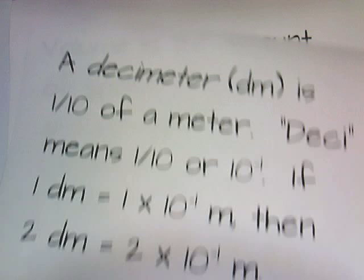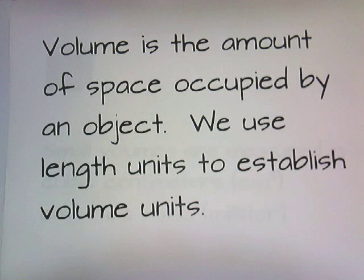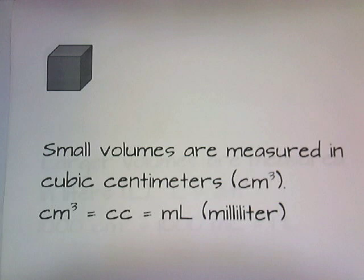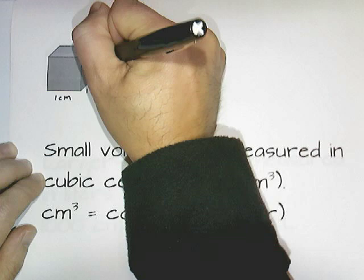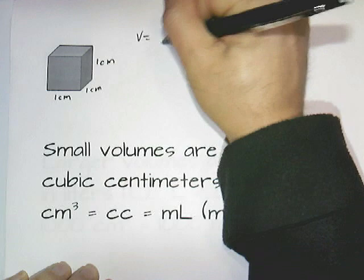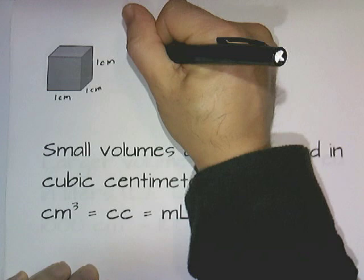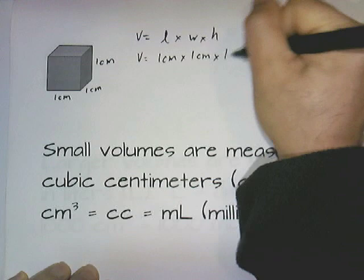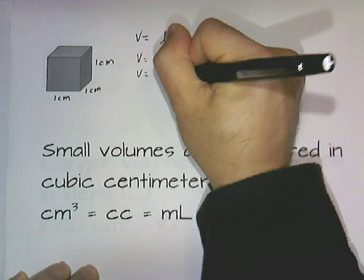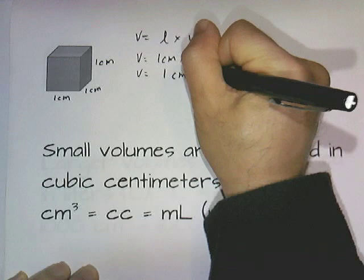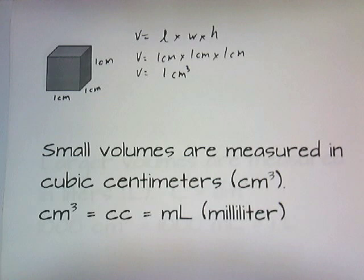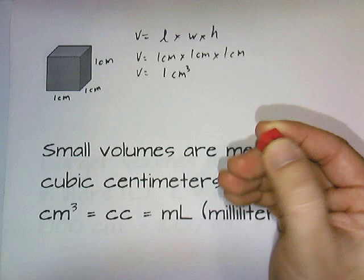We can use length measurements to determine the volume of an object. Volume is the amount of space occupied by an object, and we use length units to establish volume units. Suppose we take a cube that's one centimeter by one centimeter by one centimeter. The volume of a cube is length times width times height. So the volume is one centimeter times one centimeter times one centimeter — one times one times one is one, and centimeters times centimeters times centimeters is centimeters cubed. A cubic centimeter measures one by one by one — it's just a tiny little box. That's how much one cubic centimeter is.